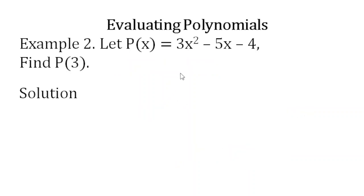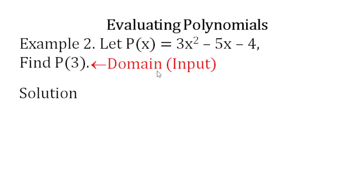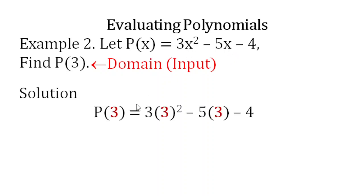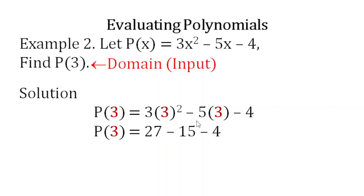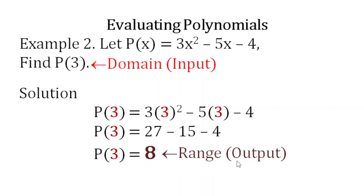Let's do another example. Let p of x equal 3x squared minus 5x minus 4. Find p of 3. This 3 is our input, so we plug it into all the x's. p of 3 equals 3 times 3 squared minus 5 times 3 minus 4. Simplifying: 3 times 9 is 27, minus 15, minus 4. Our answer is 8, which is the range or output.